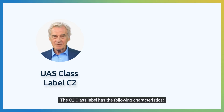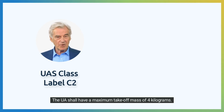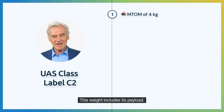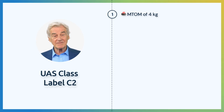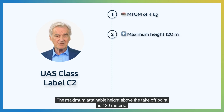The C2 class label has the following characteristics. The UA shall have a maximum takeoff mass of 4 kilograms, including its payload. The maximum attainable height above the takeoff point is 120 meters.